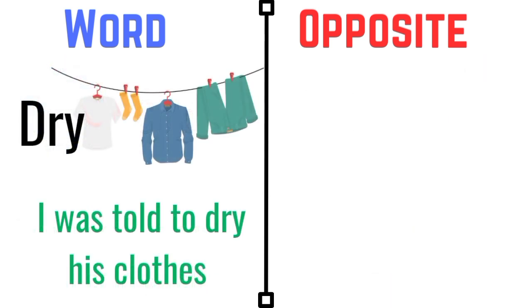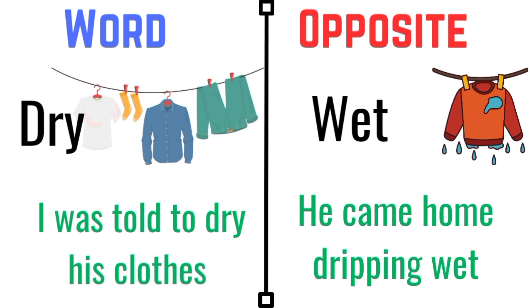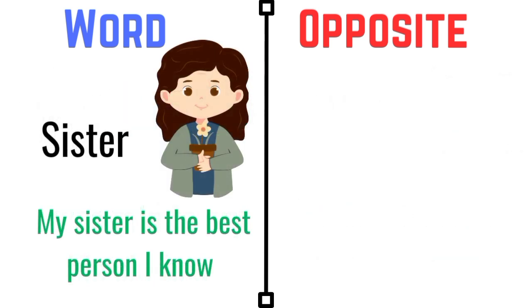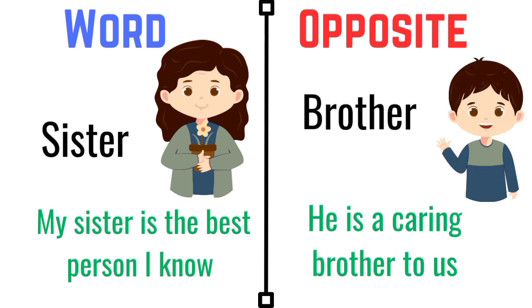Dry. I was told to dry his clothes. The opposite of dry is wet. He came home dripping wet. Sister. My sister is the best person I know. The opposite of sister is brother. He is a caring brother to us.